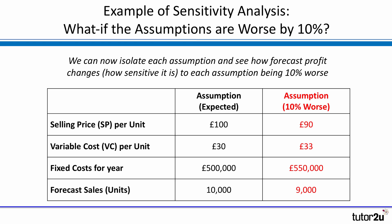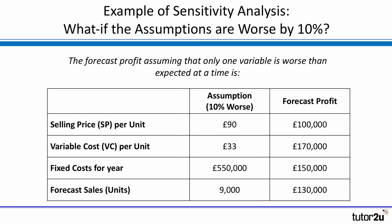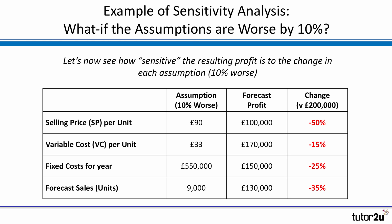Let's go through the effects — changing one variable at a time, what-if analysis. The forecast profit is always going to be worse, because our assumptions are 10% worse, but the impact on forecast profit differs. If we lower the selling price from £100 to £90 per unit, the forecast profit falls from £200,000 to £100,000 — that's a 50% fall.